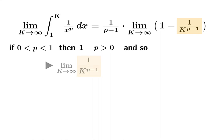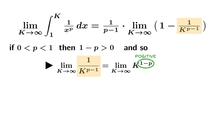The limit of 1 over k to the p minus 1 is the same as the limit of k to the 1 minus p as k goes to infinity. Since 1 minus p is positive, we're looking at a positive power of k going to infinity — which means this limit diverges to infinity.